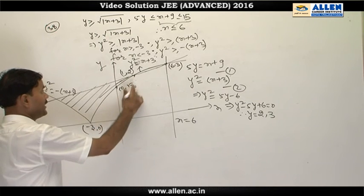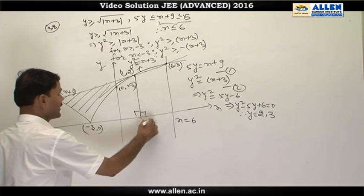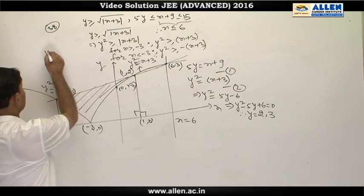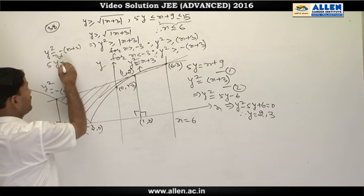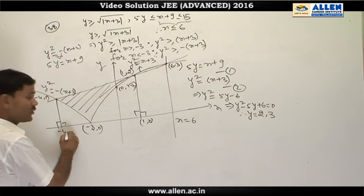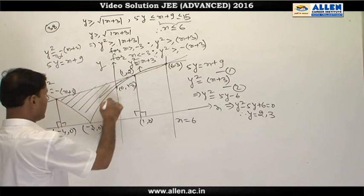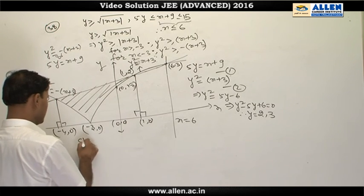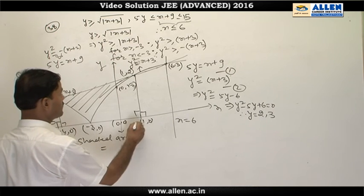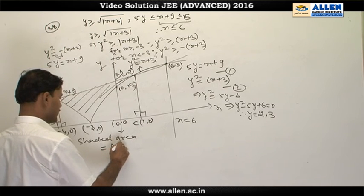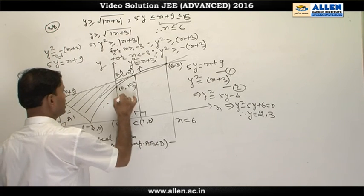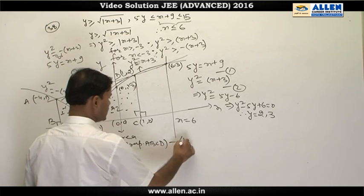The required area is the shaded region satisfying all conditions. We drop perpendiculars from these intersection points to the x-axis. Solving y² = −(x + 3) with 5y = x + 9 gives the point (−4, 1), so (−4, 0) is its foot. We label the trapezium vertices A, B, C, D and write: required area = area of trapezium ABCD − A1 − A2.